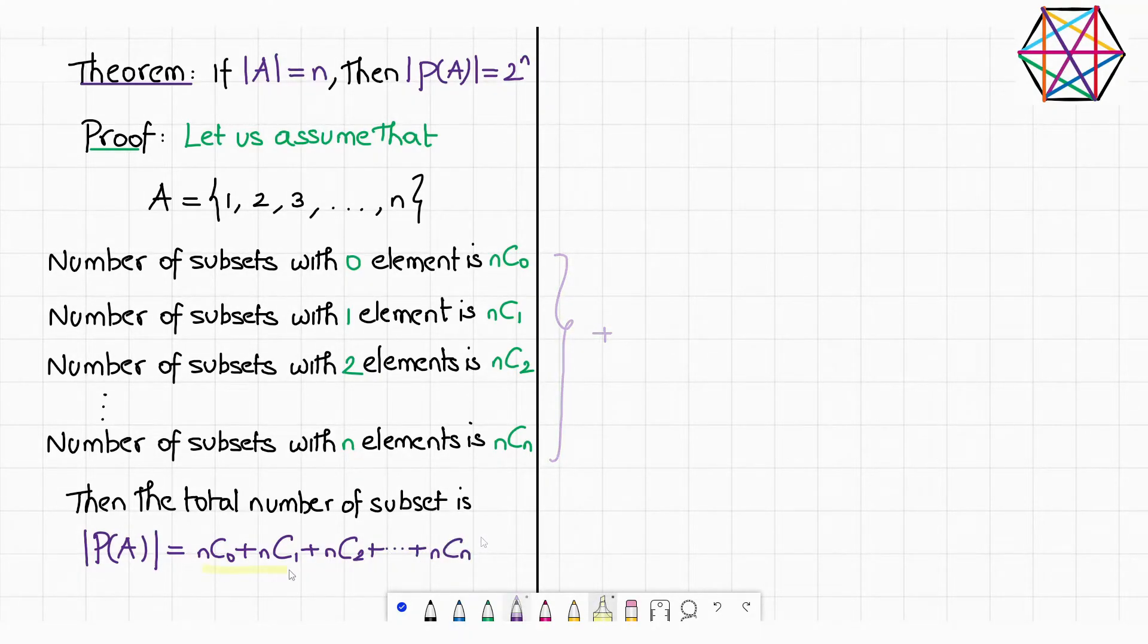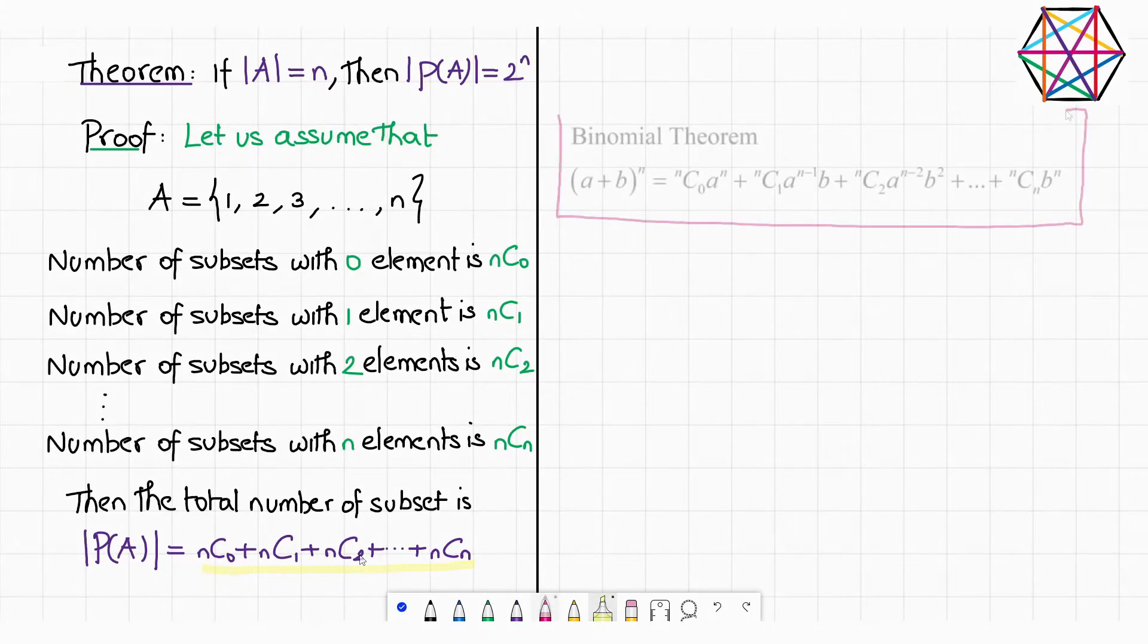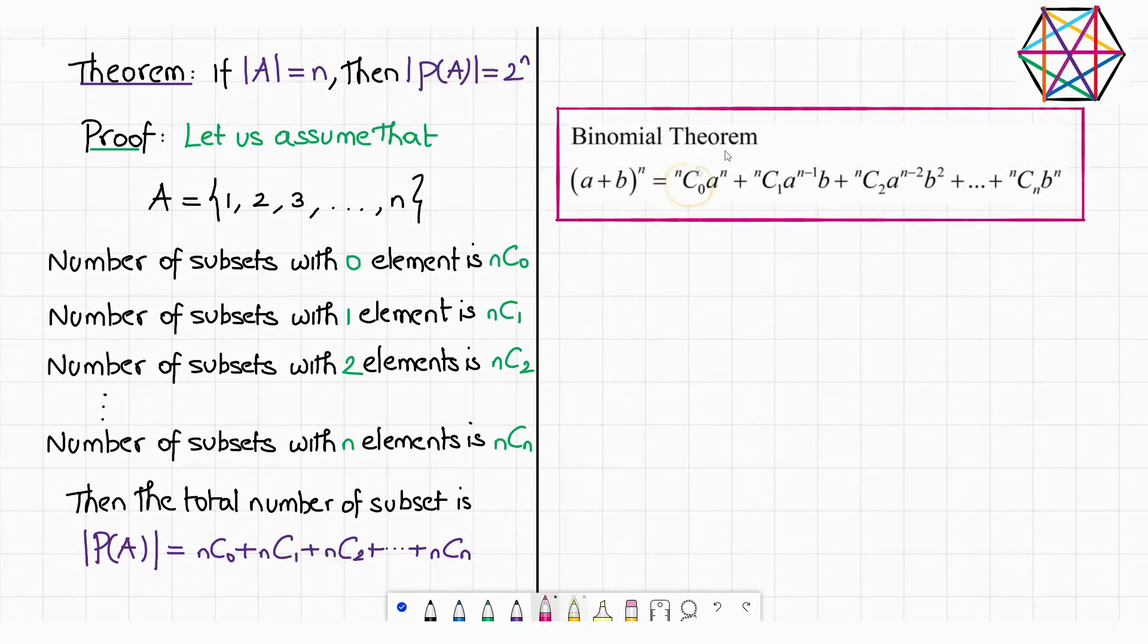Now how do we add these terms? If you observe carefully, you will recognize these terms. Because we came across these exact terms in another famous theorem. Pause and think and leave the answer in the comments below. Yes it is, the binomial theorem. Do you see that the coefficients of this binomial expansion are nothing but the terms of our series?